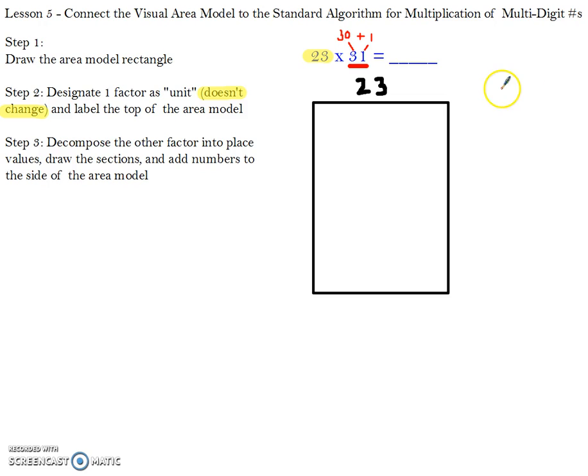The next one is to draw the different sections. Because I have those two numbers, 30 and 1, I know that I'm going to have two different sections. So I'm going to draw one smaller section because I have a smaller number, and then a larger section for my larger number. The final step for number three is to add the numbers to this side. So number one I'm going to add to the side of my area model in the smaller section because it's the smaller number, and then the 30 I'm going to add to the larger section because it is the larger number.